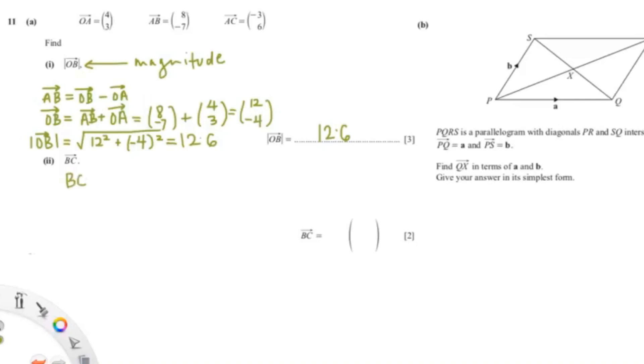So now we can break BC into two parts. We can break it into BA plus AC. So we have all the information we need from these two vectors.